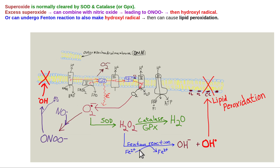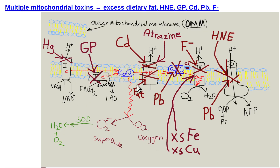If you've got excess free iron sitting around — which you don't want — it can catalyze the Fenton reaction, leading to production of hydroxyl radicals that damage membranes through lipid peroxidation. Free iron is bad; you don't want to be iron overloaded. This slide shows all the things toxic to mitochondria: mercury knocks out complex 1, glyphosate damages complex 2, cadmium/atrazine/excess dietary fat especially saturated fat damage complex 3, lead damages cytochrome C, and fluoride/excess iron/copper damage complex 4. Hydroxynonenal from lipid peroxidation from too many omega-6 fats damages ATP synthase. All of these contribute to mitochondrial injury and potentially insulin resistance — so avoid them, exercise a lot, don't be sedentary, and live simply to increase insulin sensitivity.